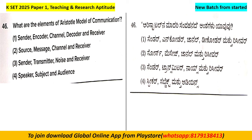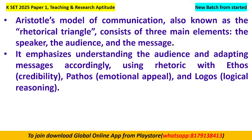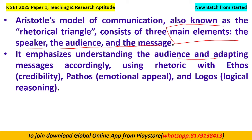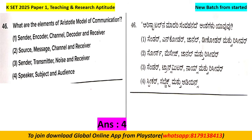Aristotle's model of communication is also known as the Rhetorical Triangle. It consists of three main elements: Speaker, Audience and the Message. It emphasizes understanding the audience and adapting messages accordingly using rhetoric with credibility, emotional appeal and logical reasoning. So the right answer is Option D: Speaker, Subject and Audience.